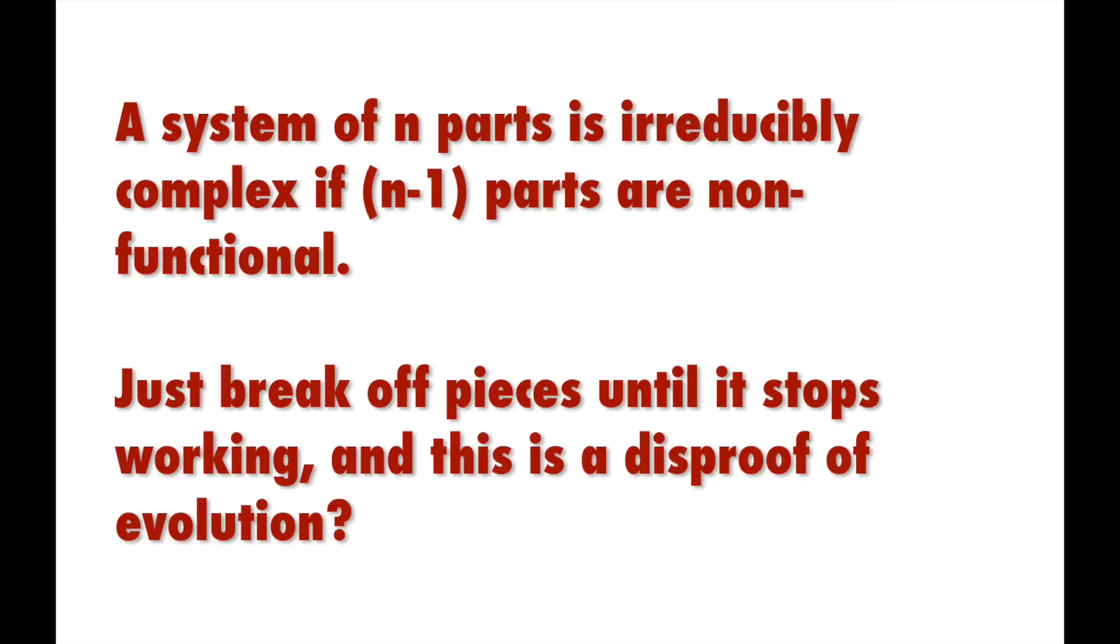So here's another way of phrasing IC. If you can find a system with n multiple parts, where removing any one piece breaks the whole system, then we can infer that a functioning system with n minus one parts cannot have existed, and therefore it could not have evolved from a simpler predecessor. Checkmate evolutionists.